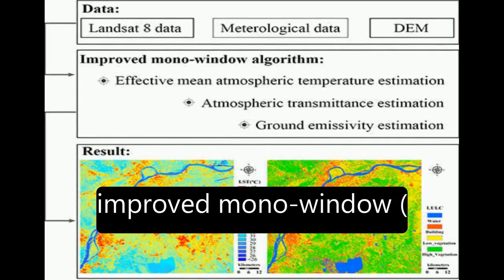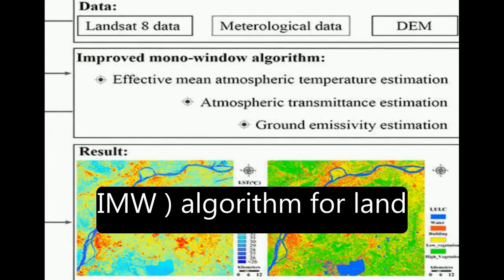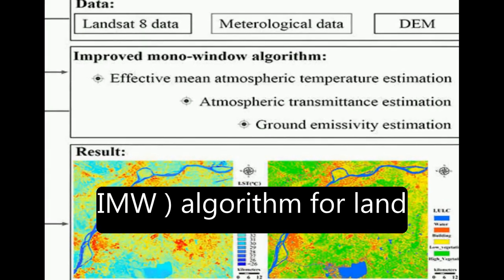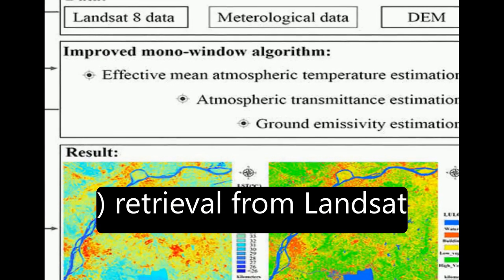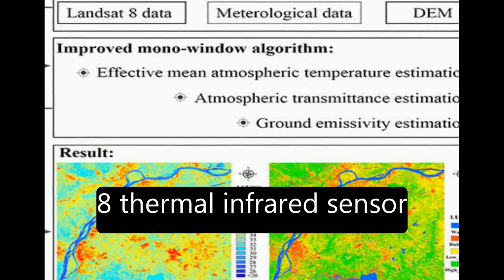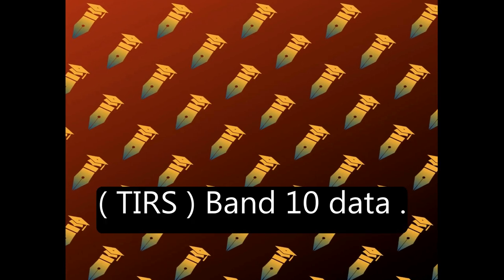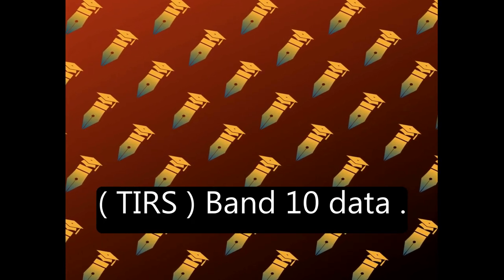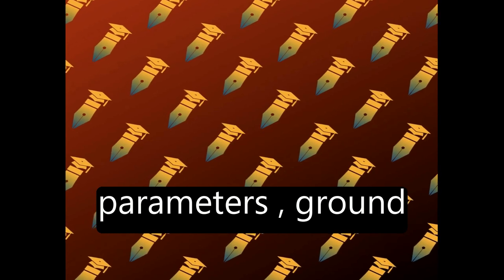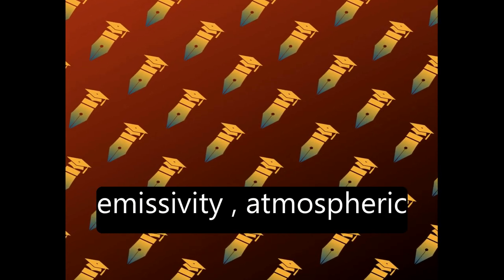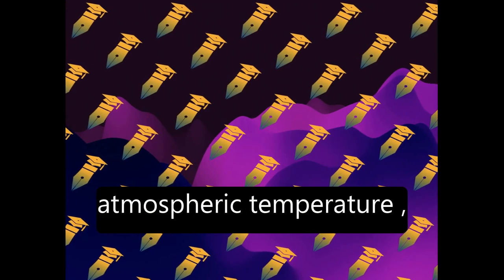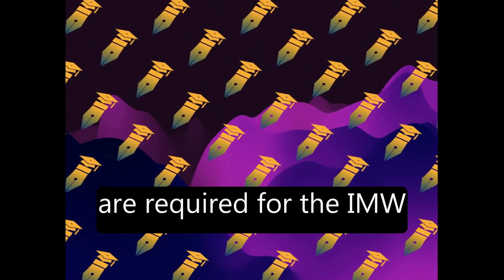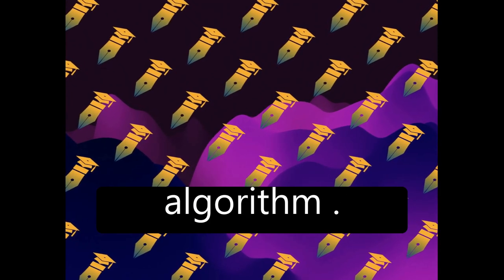The study presents an improved monowindow (IMW) algorithm for land surface temperature (LST) retrieval from Landsat 8 Thermal Infrared Sensor (TRS) band 10 data. Three essential parameters — ground emissivity, atmospheric transmittance, and effective mean atmospheric temperature — are required for the IMW algorithm.